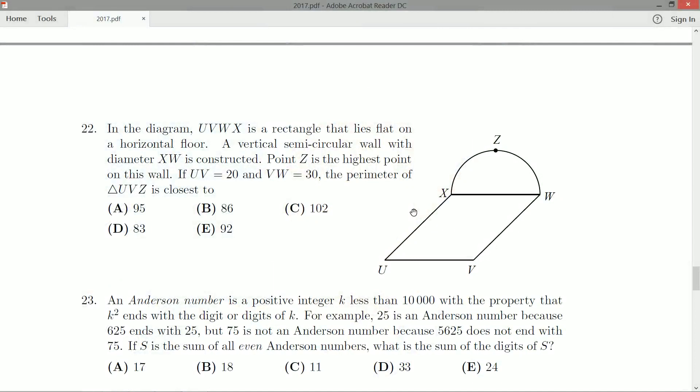In the diagram, UVWX is a rectangle that lies flat on a horizontal floor. That doesn't look like a rectangle, but I think we're in perspective here. A vertical semicircular wall, yeah, so there's some three-dimensional stuff going on here, with diameter XW is constructed. Point Z is the highest point on this wall. So it's the top of the arc of the semicircle. It's going to lie right above the midpoint there. If UV equals 20 and VW equals 30, the perimeter of UVZ, so this is going to be a triangle that sort of rises up to meet Z, but it's still a triangle. So the perimeter of that is closest to.